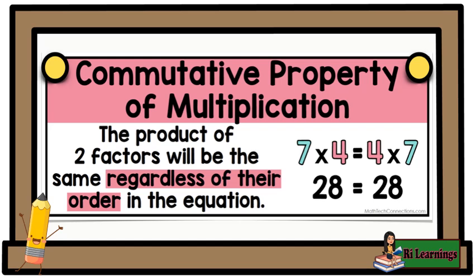The commutative property of multiplication states that the multiplication of two numbers remains the same even if the order of numbers is changed. Changing the order of multiplication doesn't change the product.